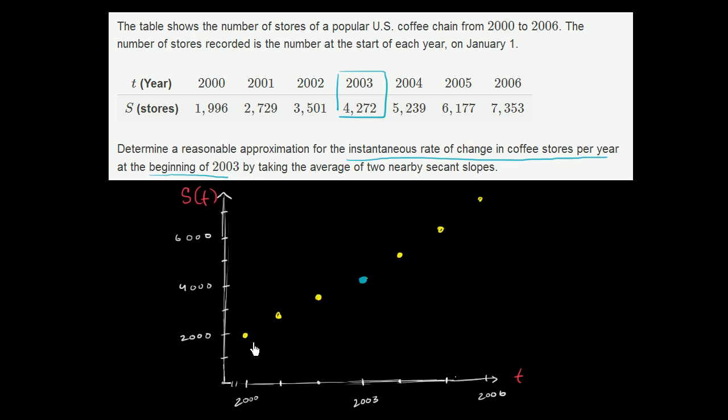Now, if you could imagine that they're constantly adding stores, you could even imagine minute by minute they're adding stores. So this is just sampling what the number of stores they had on January 1. But if you were to really plot it as a more continuous function, it might look something like this.